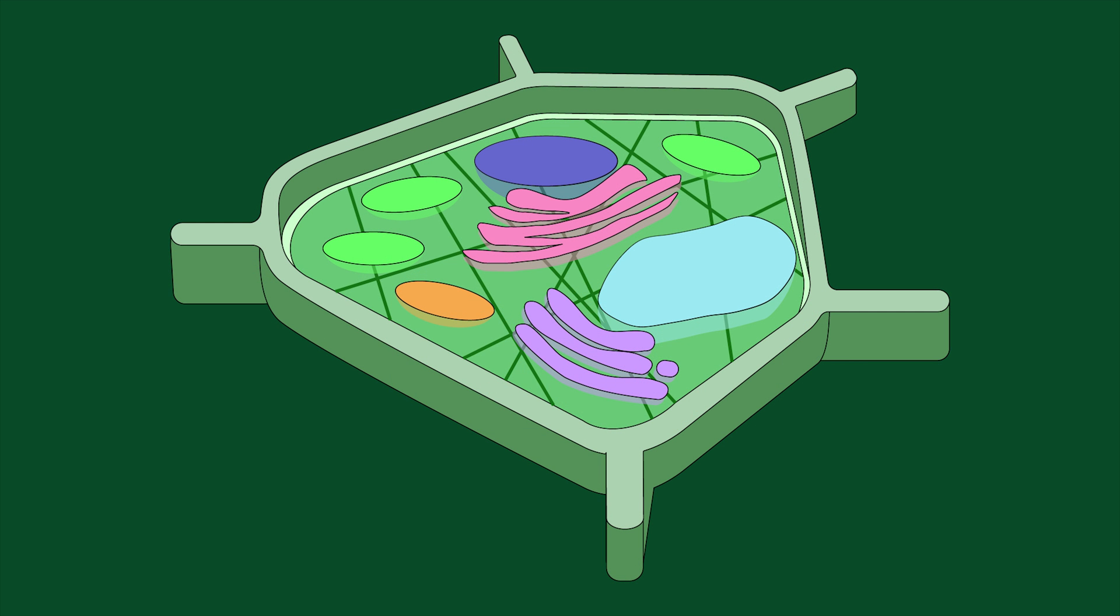But why do we care? If we know in what part of the cell proteins from the gene are expressed, we can make inferences about their function. For example, we can find the proteins in the cytoplasm, nucleus, or cytoskeleton.